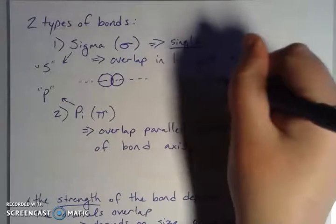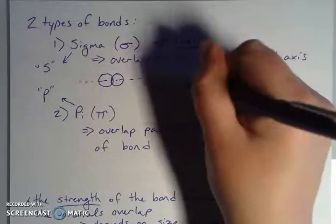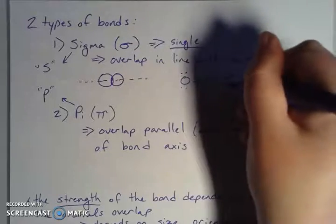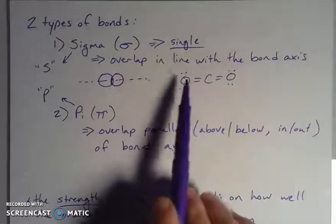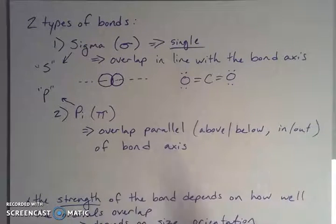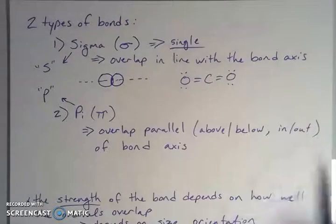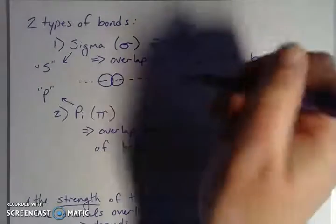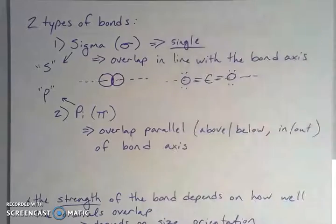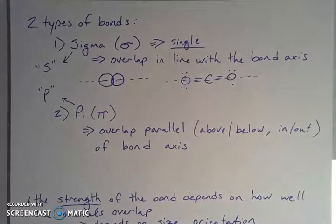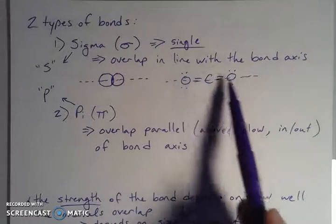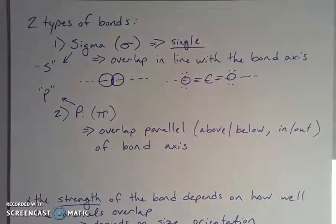We can also think about something like carbon dioxide. CO2 is a nice example because it's a linear molecule — it has two electron groups around the central atom, giving it linear geometry with a 180-degree angle between the atoms. The axis of this bond goes straight through that line, and anything in line with that axis is a sigma bond, so there is one sigma bond in each C=O bond.